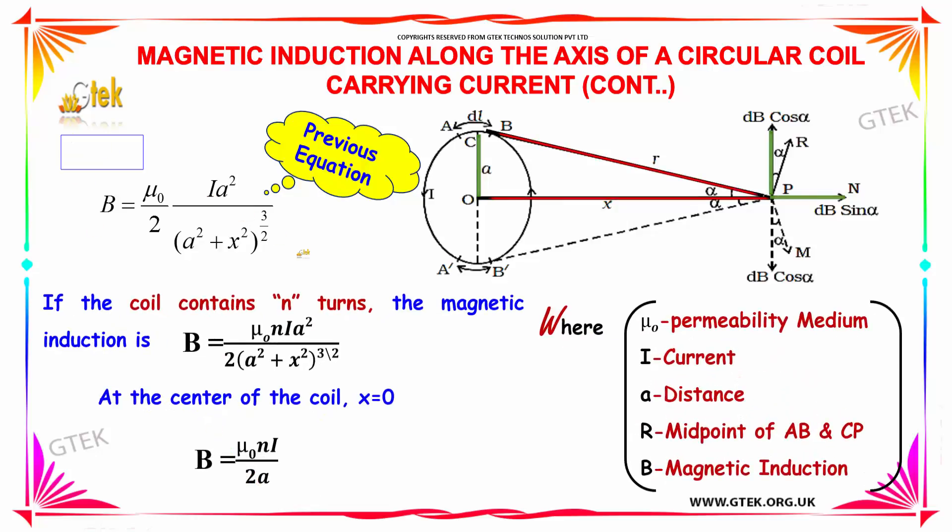This is the equation which we receive. If the coil contains n turns, the current becomes n into i and this is the final equation with n turns.